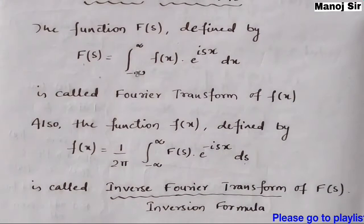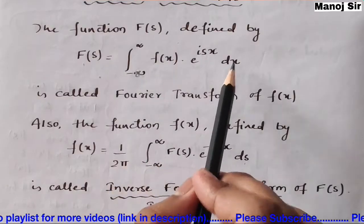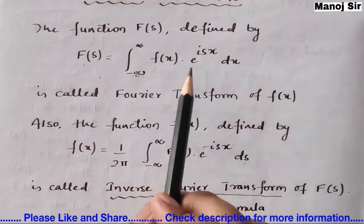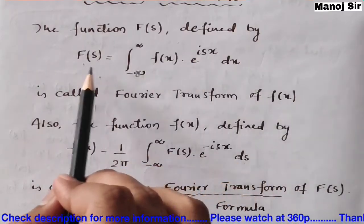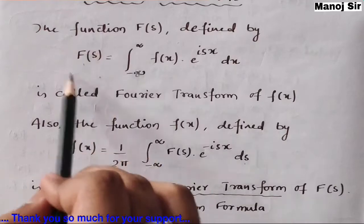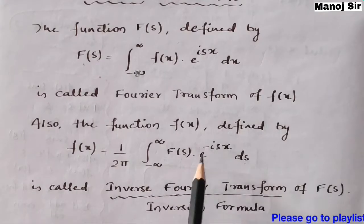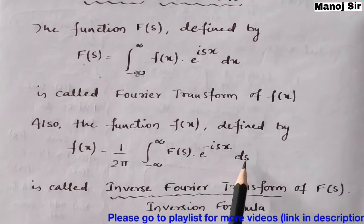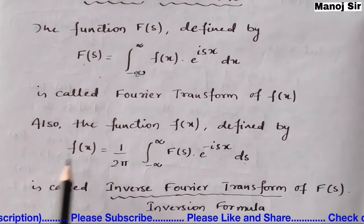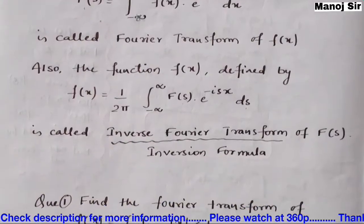To summarize: if you want to find the Fourier transform, you integrate f(x) times e to the power i·s·x dx from minus infinity to plus infinity. But if you already have F(s), you multiply it by e to the power minus i·s·x, integrate with respect to s from minus infinity to plus infinity, and multiply by 1 upon 2π — this gives you f(x), and is known as the inversion formula.